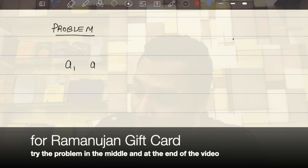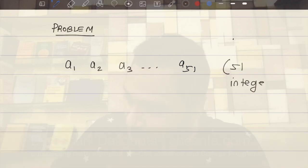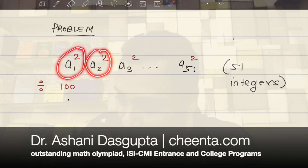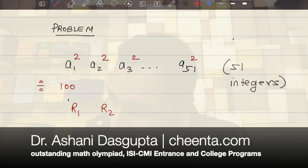Suppose we have 51 integers a1, a2, a3 up to a51. 51 integers. And we will look at the squares of these integers. So basically a1 squared, a2 squared, a3 squared up to a51 squared. We want to divide all of these numbers by 100, each of these numbers by 100, and look at the remainders that we get in the process.